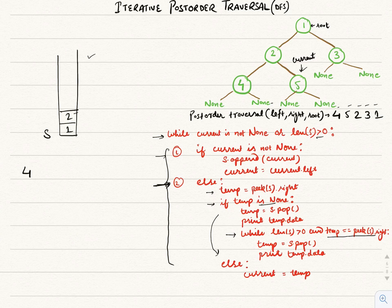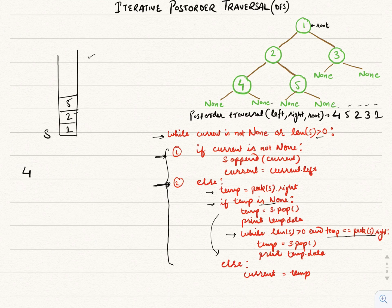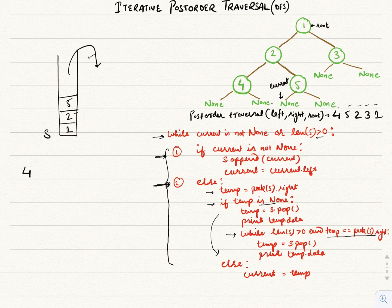The loop continues as current is not none. It falls under the first condition, so we append 5 to the stack and move current to its left. The loop continues and falls under the second condition as current is pointing to none. Here temp is none, meaning 5 is a leaf node, so we pop 5 from the stack and print it.